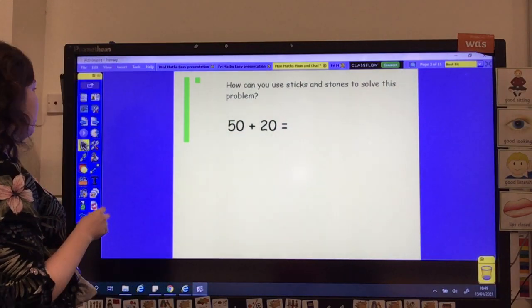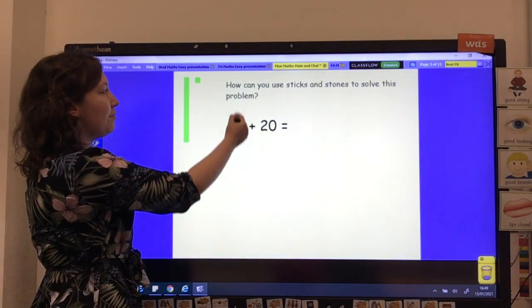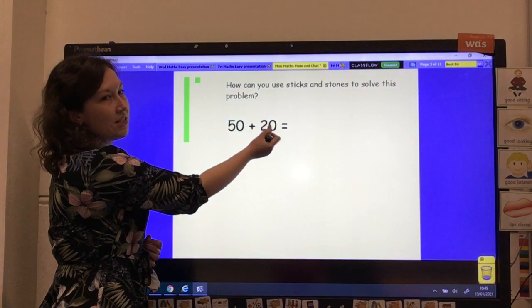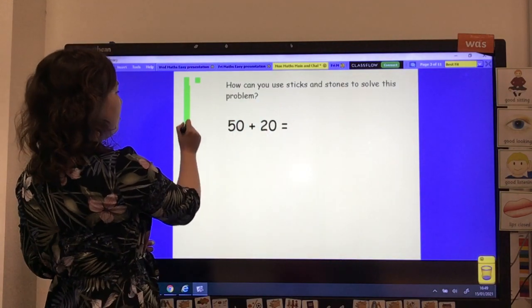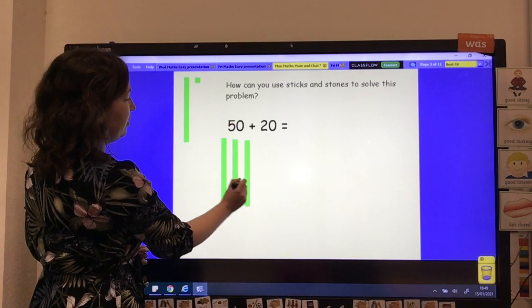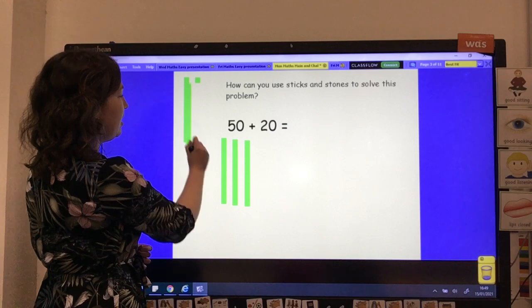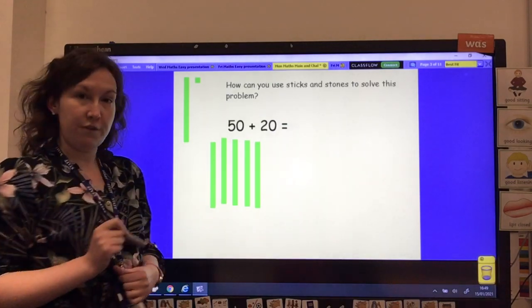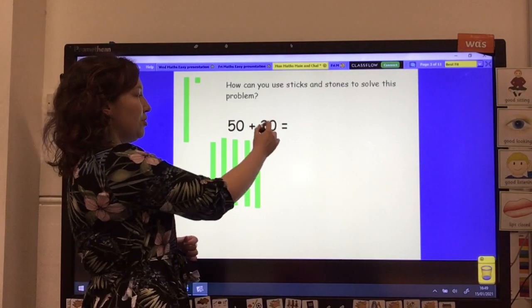Right, so if I am adding, so I've got 50, add 20. So I need to make my 50 first of all. So 10, 20, 30, 40, 50.